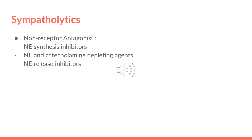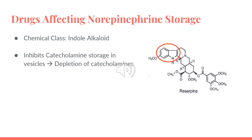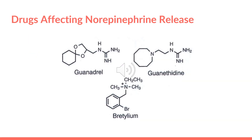Next, for the sympatholytics, they are non-receptor antagonists. They can be norepinephrine synthesis inhibitors, norepinephrine and catecholamine depleting agents, and norepinephrine release inhibitors. For drugs affecting norepinephrine biosynthesis, we have metyrosine and carbidopa. Metyrosine is a tyrosine hydroxylase inhibitor — tyrosine hydroxylase converts L-tyrosine to L-DOPA. Carbidopa is an L-DOPA decarboxylase inhibitor — L-DOPA decarboxylase converts L-DOPA to dopamine. For drugs affecting norepinephrine storage, we have reserpine, whose chemical class is indole alkaloid. It inhibits catecholamine storage in vesicles, causing depletion of catecholamines. For drugs affecting norepinephrine release, we have guanadrel, guanethidine, and bretylium. These drugs inhibit norepinephrine release, so norepinephrine won't bind on alpha-1 receptors, and this is why they can be used as antihypertensive agents.